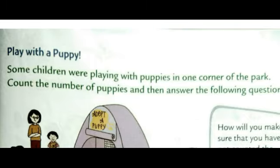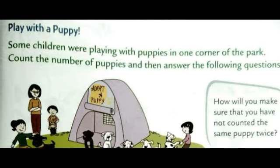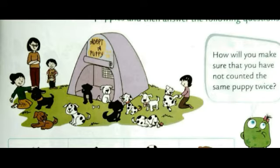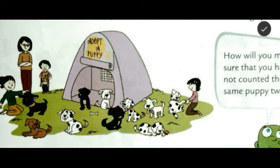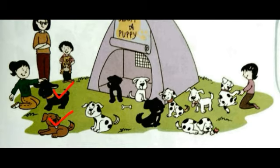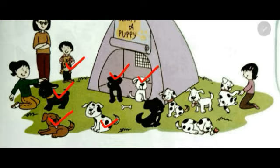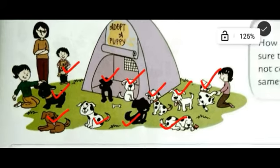Play with a puppy. Some children were playing with puppies in one corner of the park. Count the number of puppies and then answer the following questions. We will count how many puppies are there: 1, 2, 3, 4, 5, 6, 7, 8, 9, 10, 11 — total 11 puppies are there.